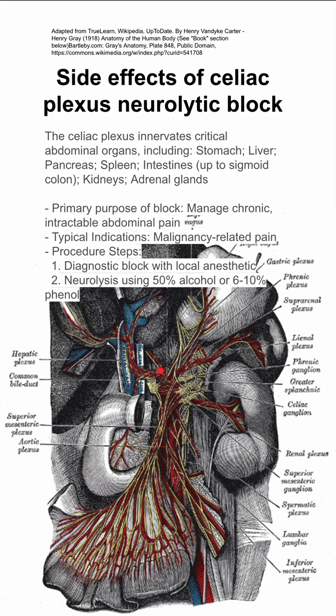Once you've done that diagnostic block and are reassured that blocking the celiac plexus prevents some of the pain in the patient, you can then do neurolysis with 50% alcohol or 6 to 10% phenol.